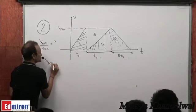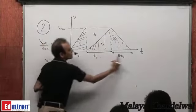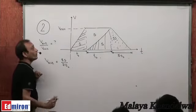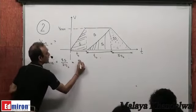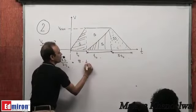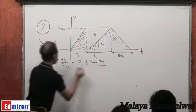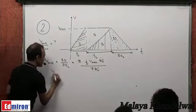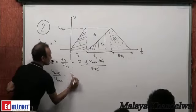The average velocity is total displacement divided by total time. Total displacement is S + 2S + 5S = 8S. Total time is T0 + 2T0 + 5T0 = 7T0. Now, S = ½·Vmax·T0, so replacing S: average velocity = 8·(½·Vmax·T0) / (7T0). T0 cancels, giving V_avg / Vmax = 4/7.